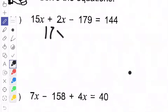So it'll be 17x. That's a 17. Minus 179 equals 144. Now we learned in class that we need to isolate the variable. That means get it by itself. So the first step is to get rid of the 179.